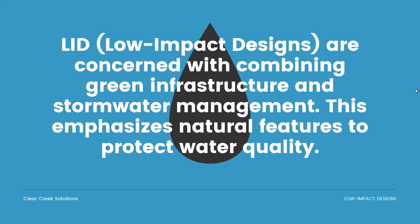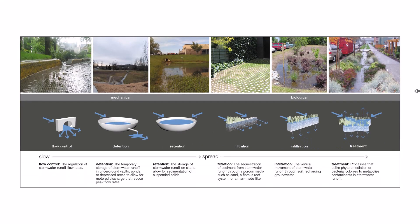Low impact designs are concerned with combining green infrastructure and stormwater management. This emphasizes natural features to protect water quality and our local environments. Here are some pictures of what are commonly referred to as low impact designs. What we're trying to do is integrate the natural environment and the aesthetic pleasing nature of our natural environment with actual stormwater designs to help with mitigation, water quality, filtering, and so on.